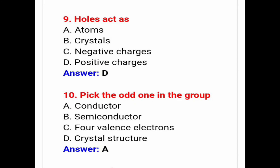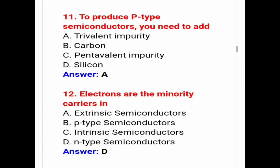Tenth, pick the odd one in the group: conductor, semiconductor, four valence electrons, or crystal structure. Answer is option A — conductor. To produce p-type semiconductors, you need to add trivalent impurity, carbon, pentavalent impurity, or silicon. Answer is option A — trivalent impurity.